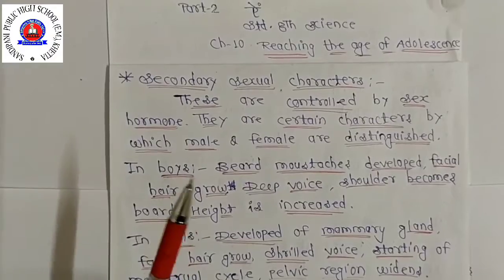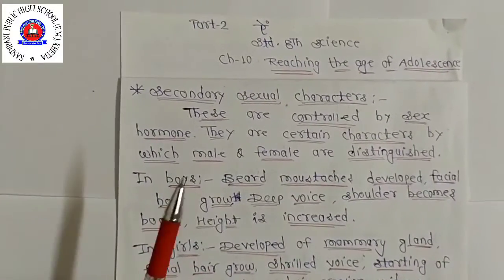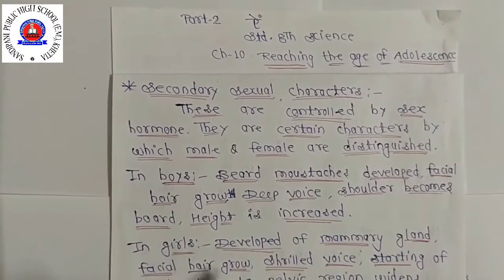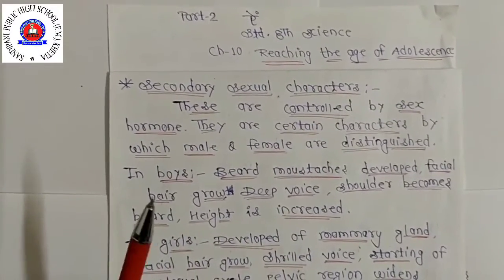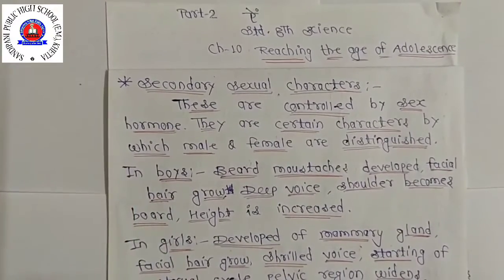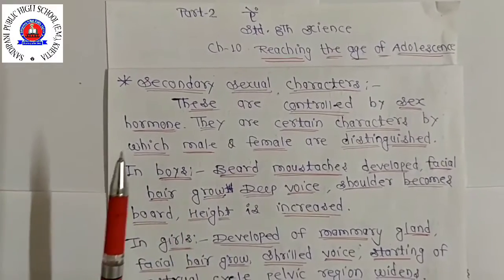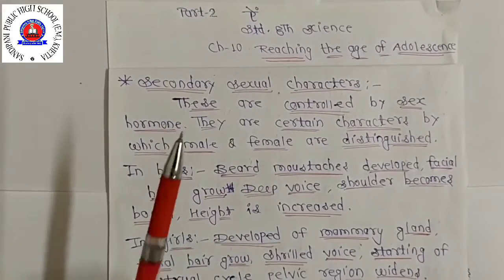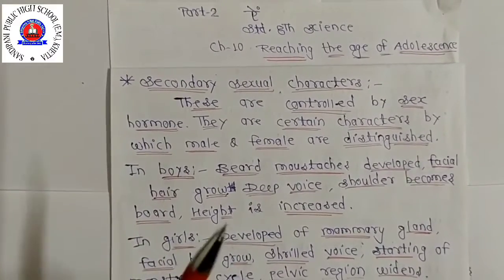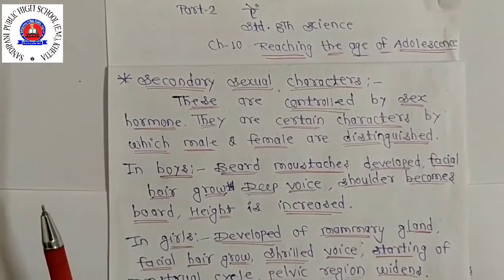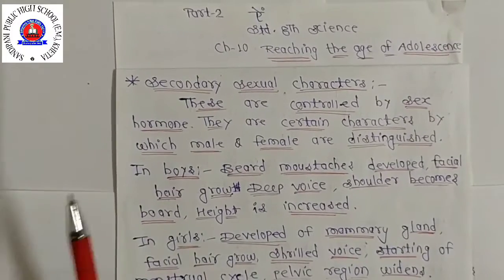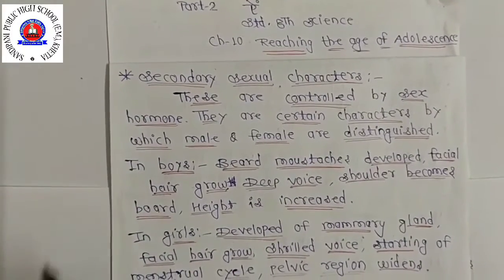Voice deepens and may crack. Chest and shoulders broaden, and the penis and testes become larger. The testes start to make sperm, and feelings and sexual drives associated with adulthood begin to develop. All these changes in boys are brought about by the male sex hormone testosterone, made in the testes.